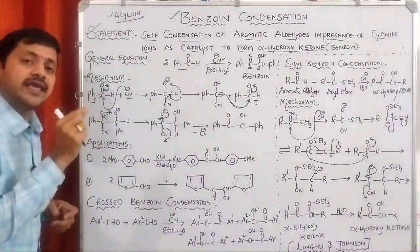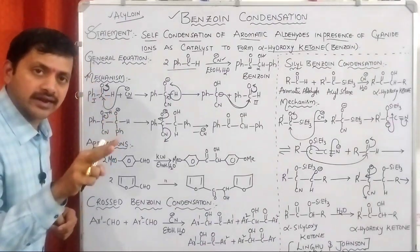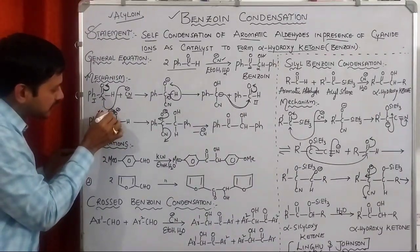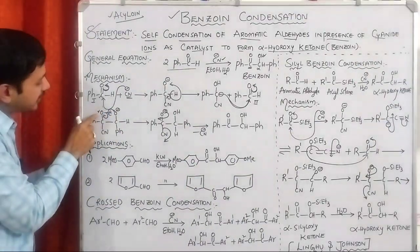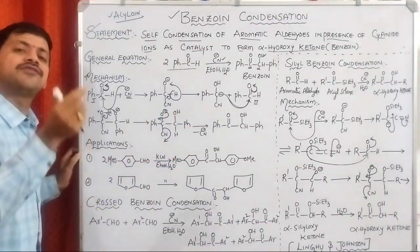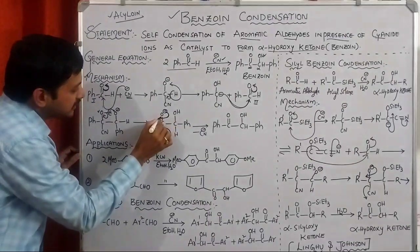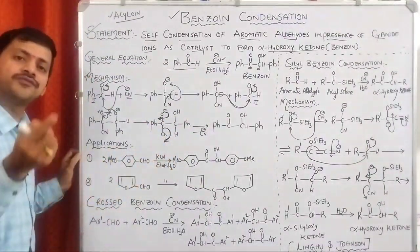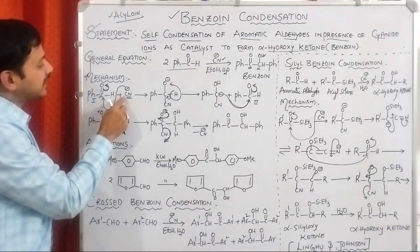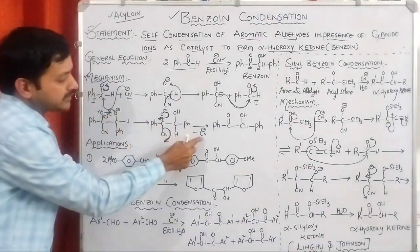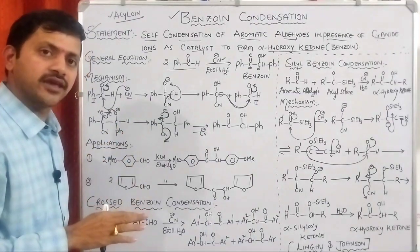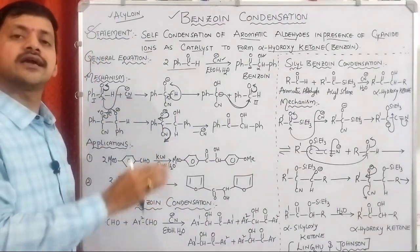At this point, exchange of H⁺ takes place between the two oxygen atoms. The H⁺ moves from the OH oxygen to the O⁻, creating a negative charge on that oxygen: Ph-C(O⁻)(CN)-C(OH)(H)-Ph. In the final step, the O⁻ forms C=O, and CN⁻ is removed. We get the corresponding alpha-hydroxy ketone. Since CN⁻ is used initially and regenerated at the end, it acts as a catalyst in this transformation, converting aromatic aldehyde into benzoin.